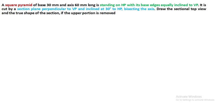Hello friends, in this session we will discuss one more problem in the section of solids. The solid chosen is a square pyramid. In the previous video we discussed the square prism — you can check the description box for the link to that problem. The question is: a square pyramid of base 30 mm, axis 60 mm long, is standing on HP with its base edges equally inclined to VP. It is cut by a section plane perpendicular to VP and inclined at 30 degrees to HP, bisecting the axis. Draw the sectional top view and the true shape of the section if the upper portion is removed.